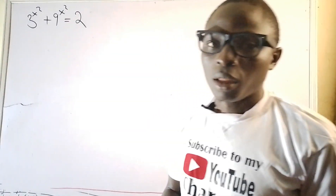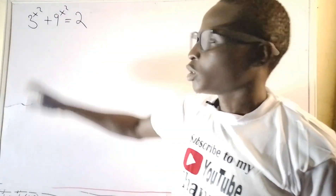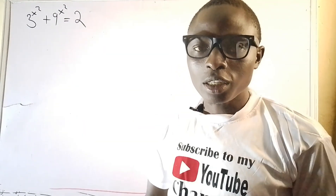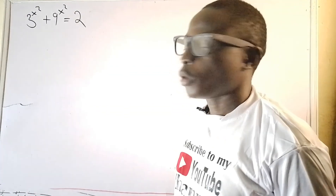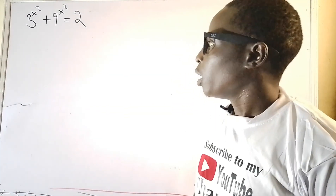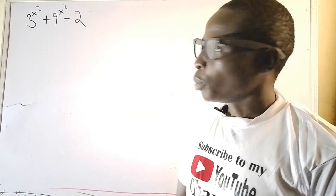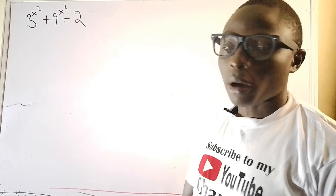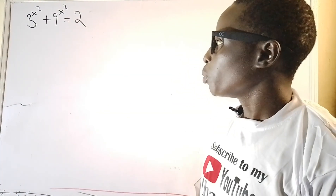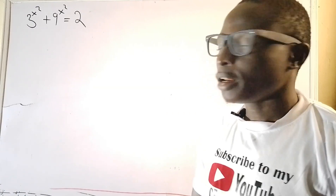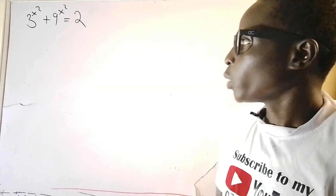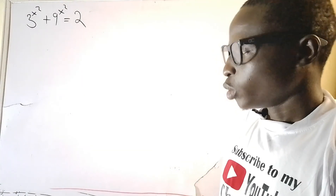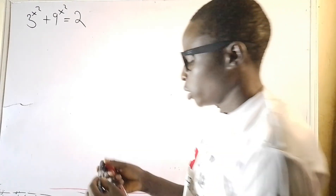Hello viewers, let's find a solution to this interesting equation. The equation on the board says 3 raised to the power x squared plus 9 raised to the power x squared is equal to 2.